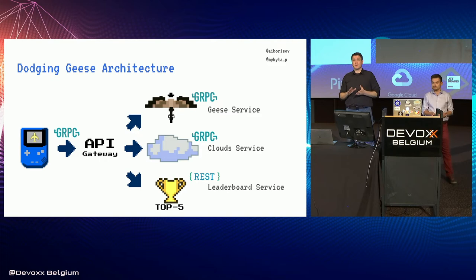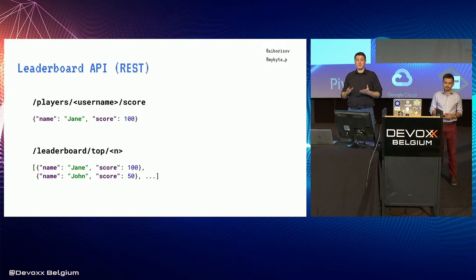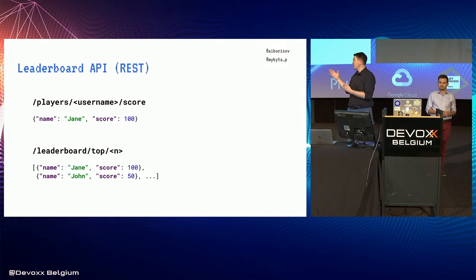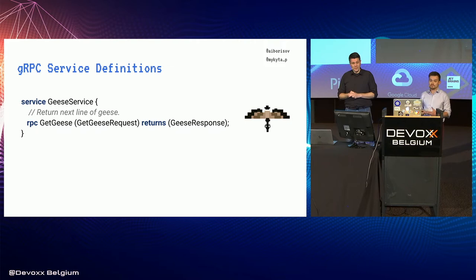Let's review our services in more detail. We have RESTful APIs in the leaderboard: we can query it to get a player score, get the data, change it, send it back to the server, and then query another API to get top-N scores — building a leaderboard with top-N players to display to users.